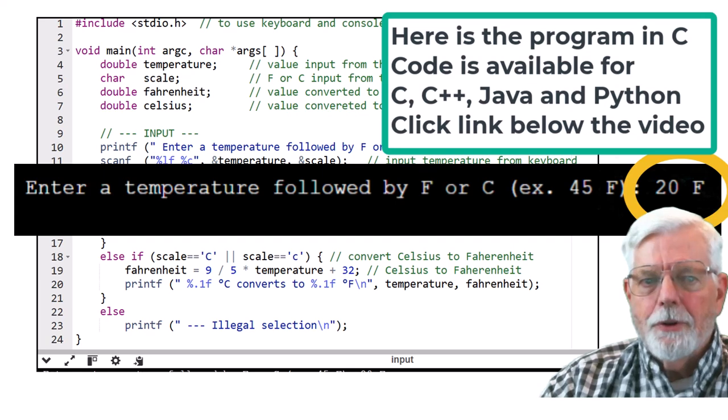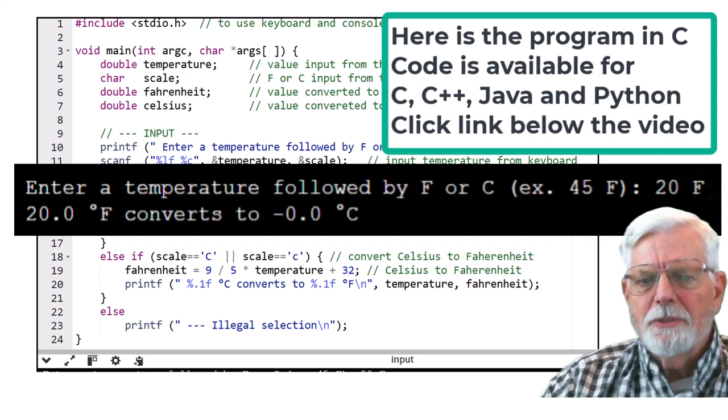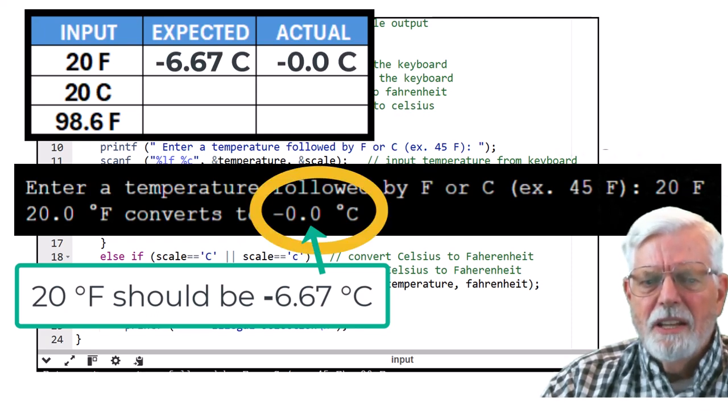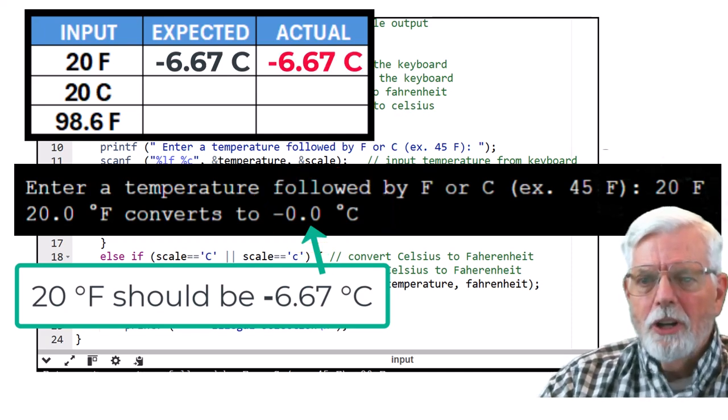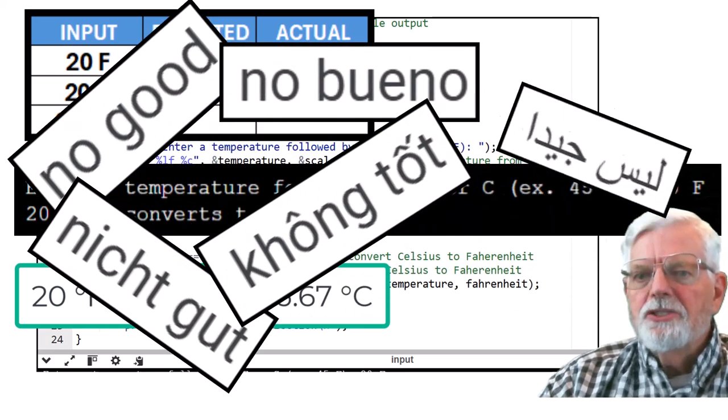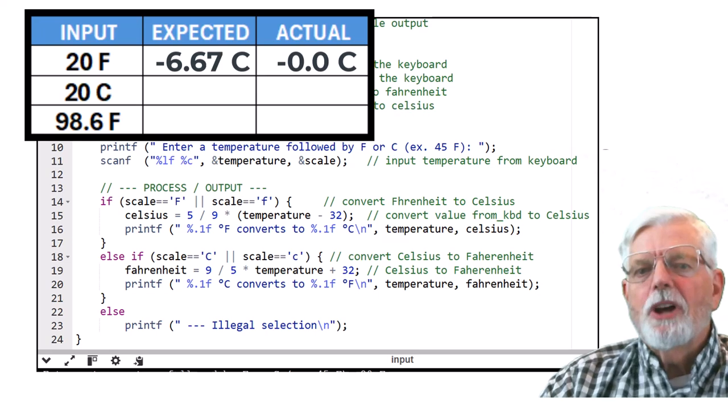Enter 20F for the first value. The program says 20 degrees F converts to negative 0.0 degrees C. The expected value was negative 6.67 degrees C. The negative sign on the 0.0 degrees C is weird, so what do we enter into the table? We could always fudge the table to make it look like the values matched. No good, no bueno, nix good, con tot, les jae de, non va bene, buao, tomato. I don't care how you say it. If it ain't right, don't write it down.